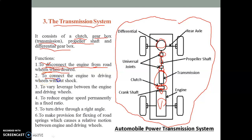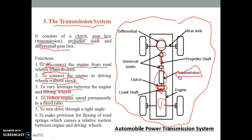The second function is to connect the engine to the driving wheel smoothly — this is the most important function of the transmission system, to avoid different types of vibrations. The third function is to vary leverage between the engine and driving wheel to control acceleration or variation of speed. The fourth function is to reduce engine speed permanently in a fixed ratio, which is controlled by the gearbox.